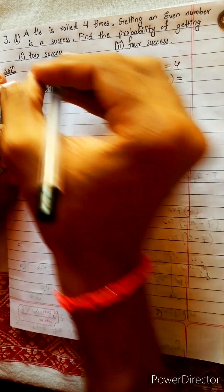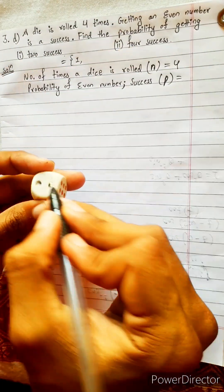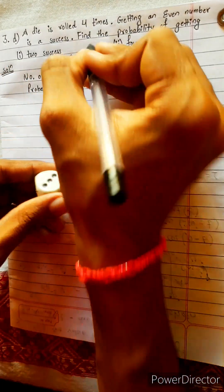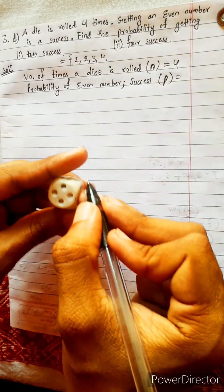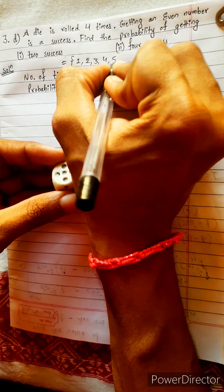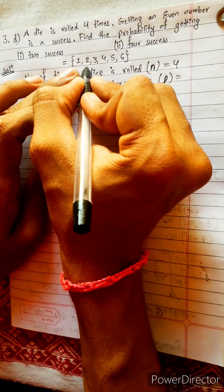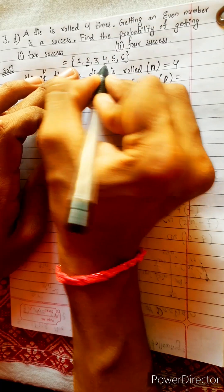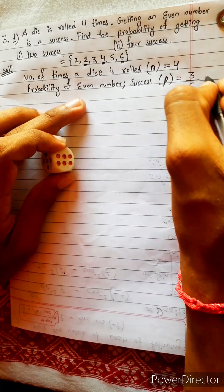Favorable case. How many are favorable? Let's write here. Here we have one eka, duki, thirki, chauki, and panza, pachki, and chaka. Even number. How many are even? One even, two even, three even. There are total three even numbers divided by total number six. This will be one by two.